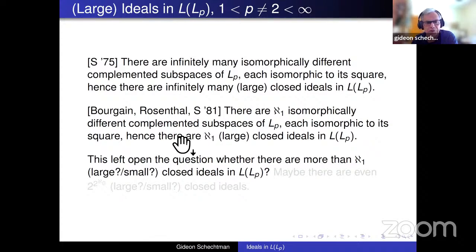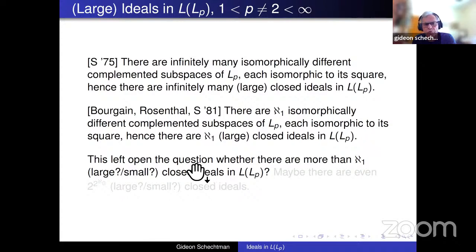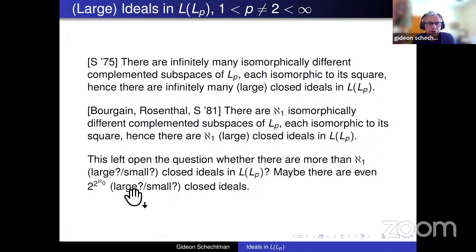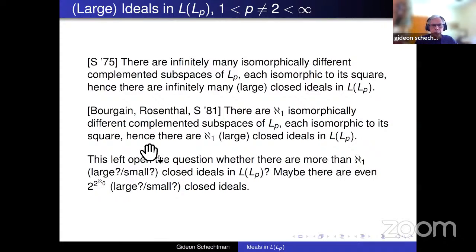This left open the problem of whether there are more than ℵ_1 large or small closed ideals. By the way, it is not known if there are more than ℵ_1 isomorphically different complemented subspaces of Lp — I think this is a more interesting question, and many people including myself have spent a lot of time on it without success. There may be a continuum of such subspaces, under or without the continuum hypothesis, but this is not known.